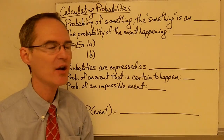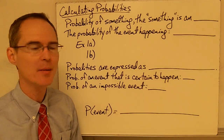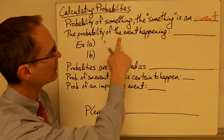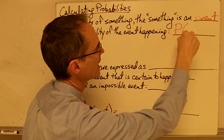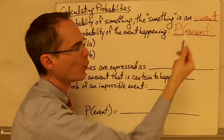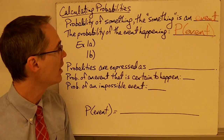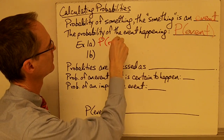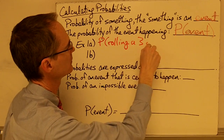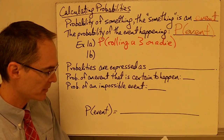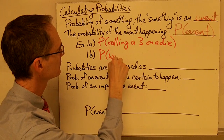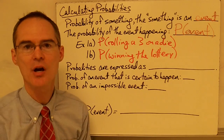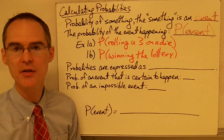When we want to calculate the probability of something happening, that something is called an event. The probability of an event happening is written with a capital P followed by parentheses containing whatever the event is. For example, the probability of rolling a three on a die would be written P(rolling a three on a die), and the probability of winning the lottery would be written P(winning the lottery). This is a shorthand notation that is handy for writing down the probability you're looking for.